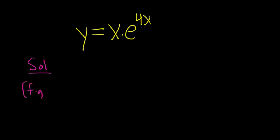So if you have f times g, it's the derivative of the first piece, which is f, times the second piece, plus the first piece, which is f, times the derivative of the second piece. So here, this is our first piece, and this is our second piece.